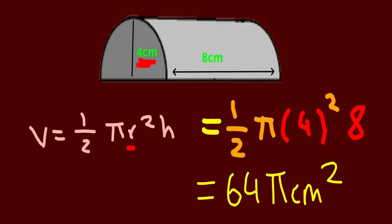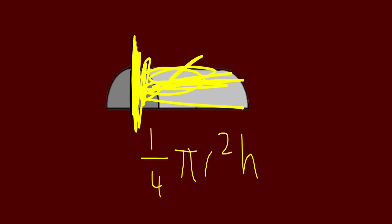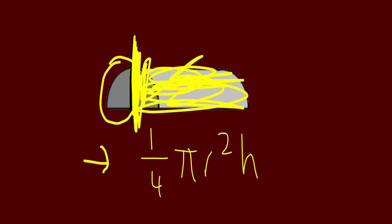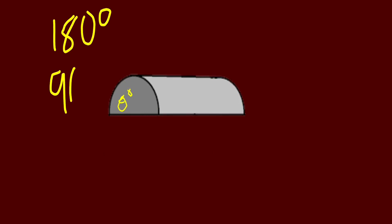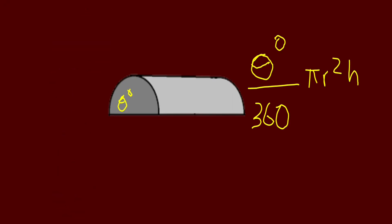Here are some formulas. If you have a quarter cylinder, all you have to do is one quarter times pi times r squared times height to find out the volume.